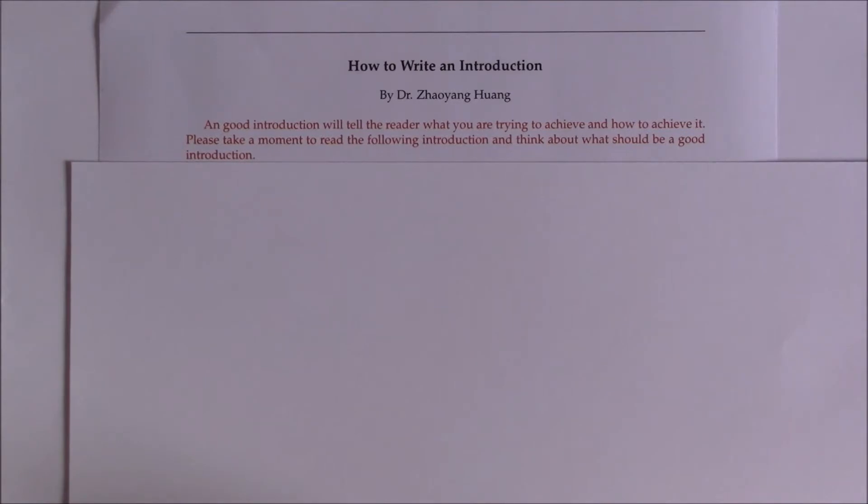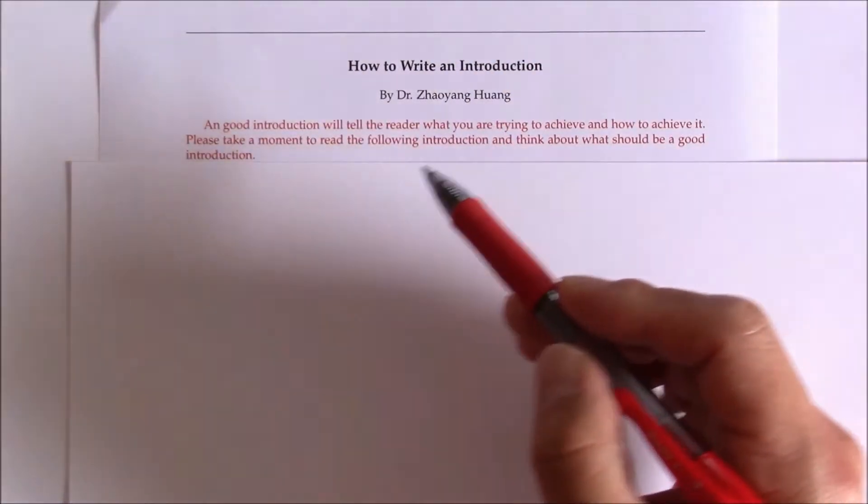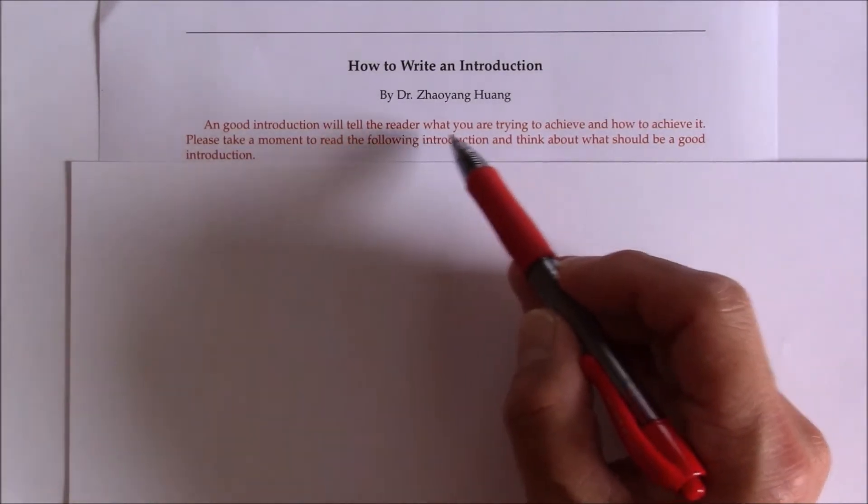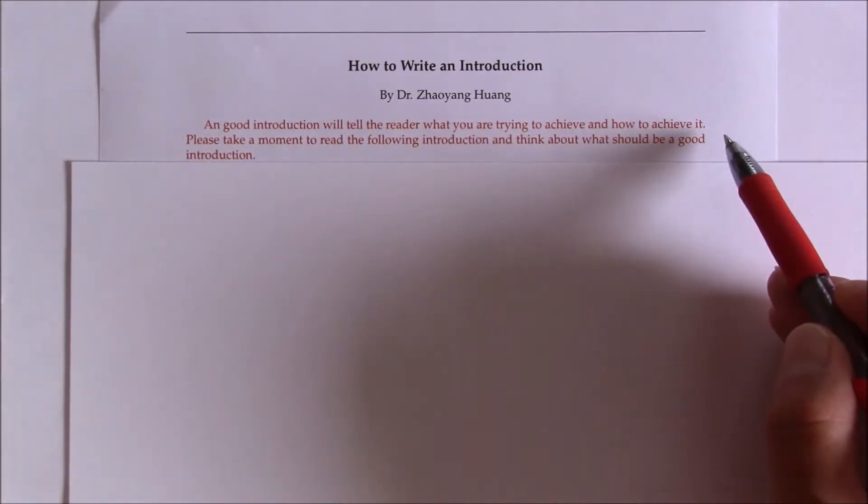The first part of a lab report is called an introduction. A good introduction will tell the readers what you are trying to achieve and how to achieve it. In other words, a good introduction will tell the readers the purpose or the purposes of the experiment and the experimental principle, the principle to achieve the experimental purposes.